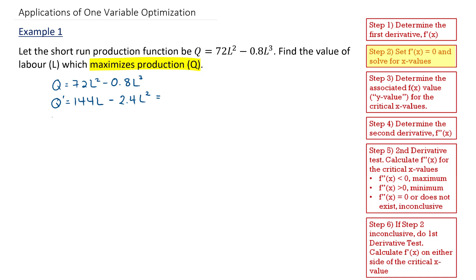Next, I'm going to set this first derivative to be equal to 0 and solve for the L values. Now I'm going to factor this out. So I can factor out an L and I get 144 minus 2.4L. This is all going to be equal to 0. And so this is going to happen when either of these terms are equal to 0. So I have two solutions here.